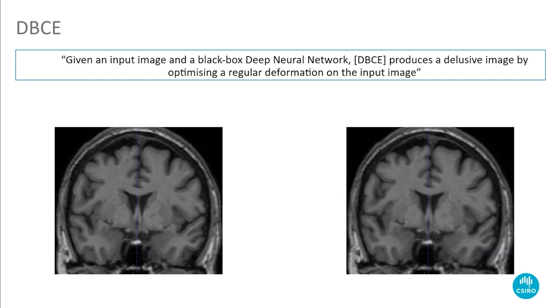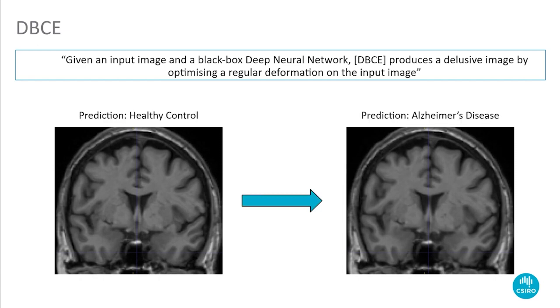We see in the figures below two MRI images of the brain that are very similar. However, the deep neural network predicts the right image as a healthy control patient, and the left, produced by DBCE, as an Alzheimer's disease patient.